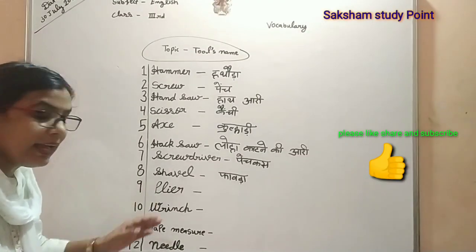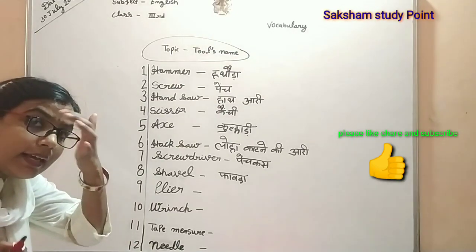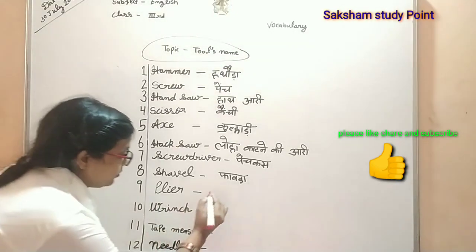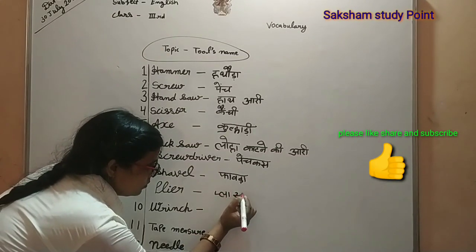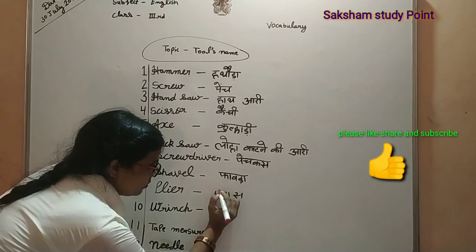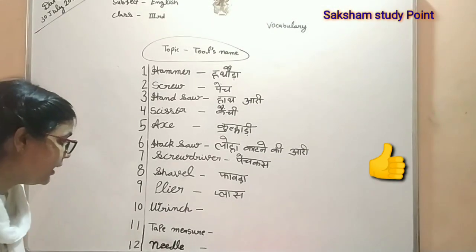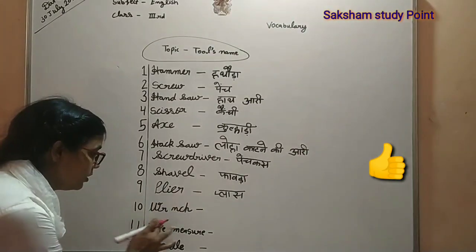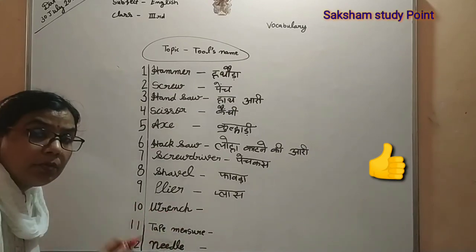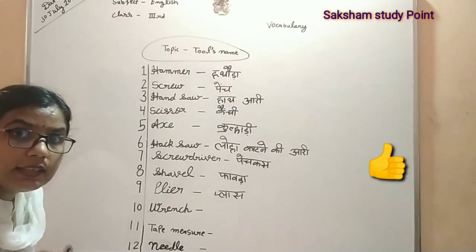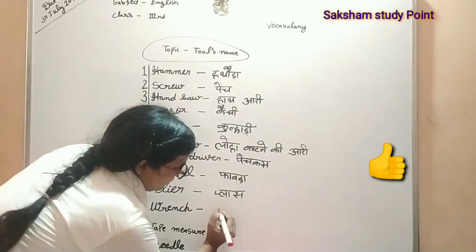P-L-I-E-R-S, pliers. Pliers means hota hai — plus (chimta). W-R-E-N-C-H, wrench. Wrench means hota hai — paana.